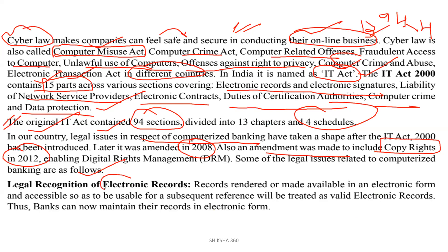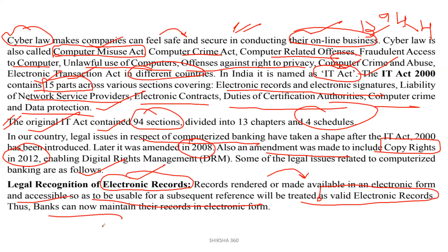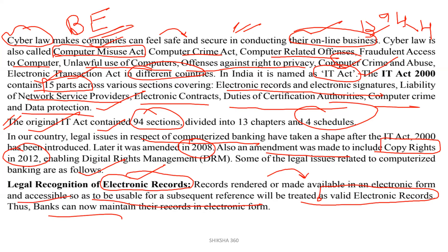Legal recognition of electronic records. Earlier, physical records — that is handmade records — were to be provided. Now electronic records have legal recognition. Records rendered or made available in an electronic form and accessible so as to be usable for a subsequent reference will be treated as valid electronic records. Thus, banks can now maintain their records in electronic form. Like the Bankers' Evidence Act, changes have been made so electronic records can also be validated.